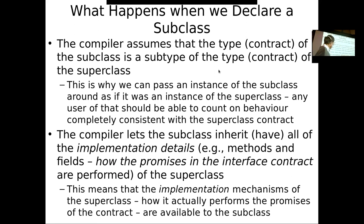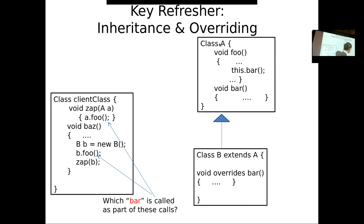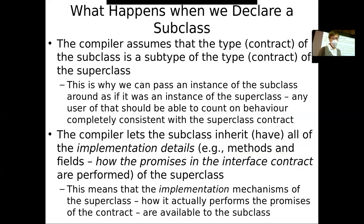I want to remind you of what happens in a language like Java when we declare a subclass. If one class is a subclass of another — like B extends A — the compiler assumes that the type of the subclass is a subtype of the superclass. So one of the things this means is that a B can be passed around as if it were an A.